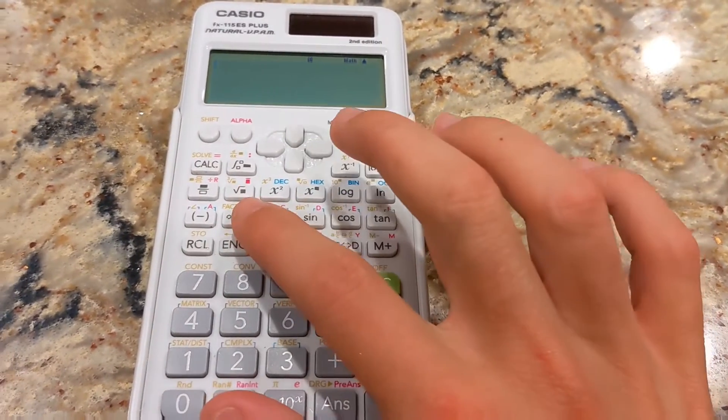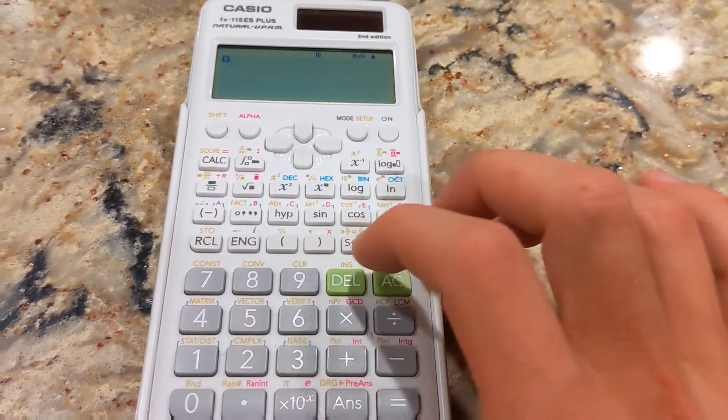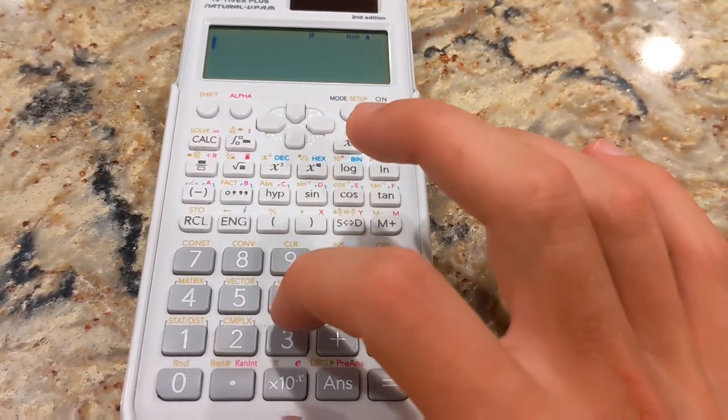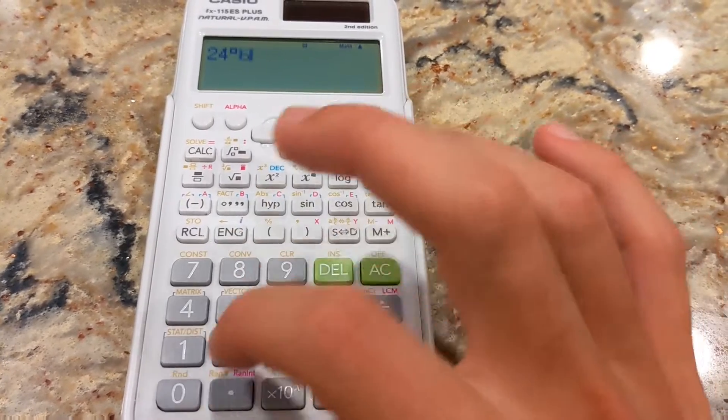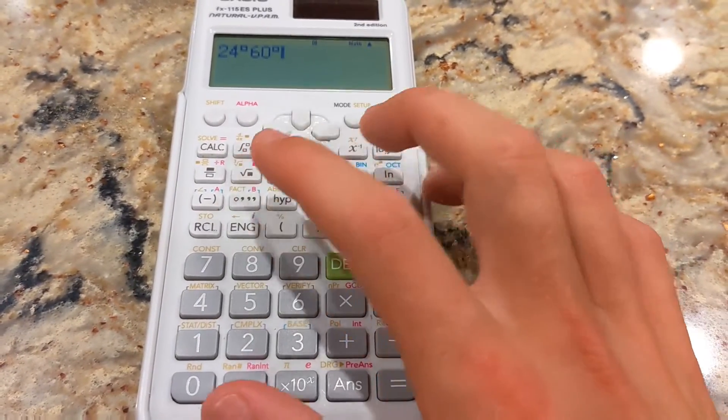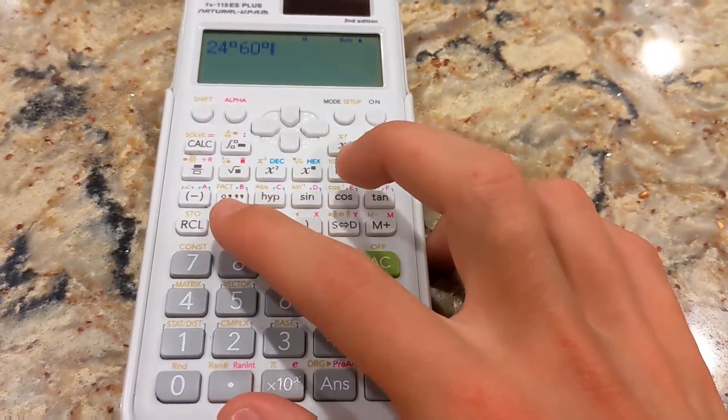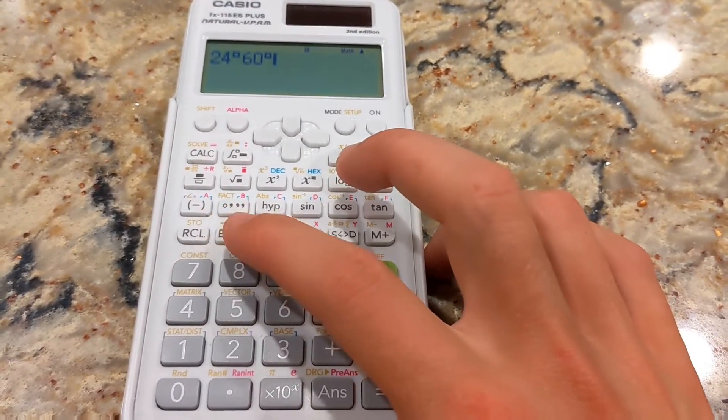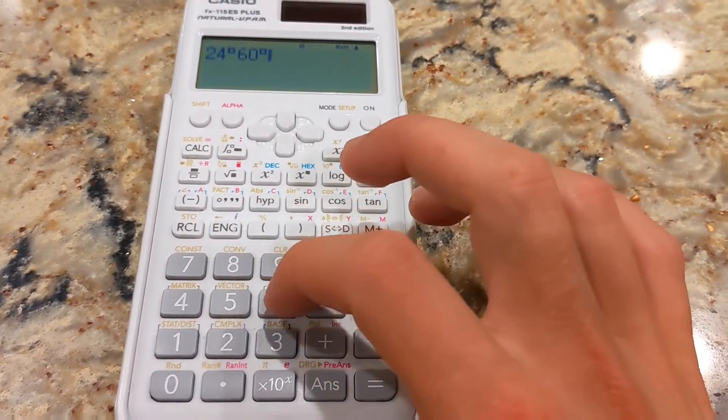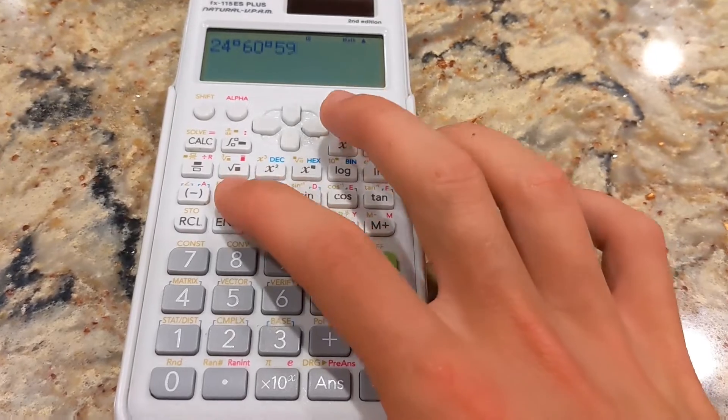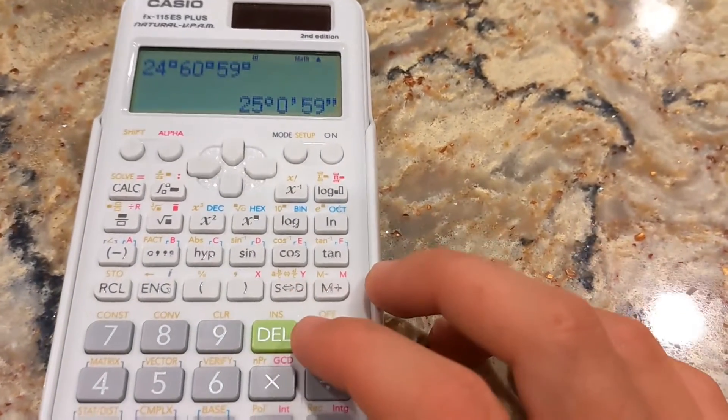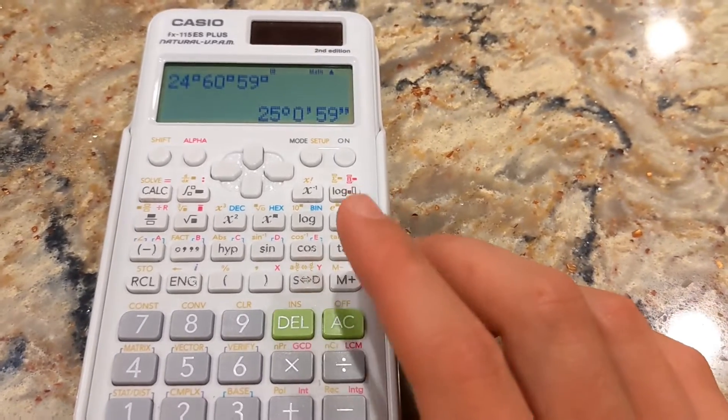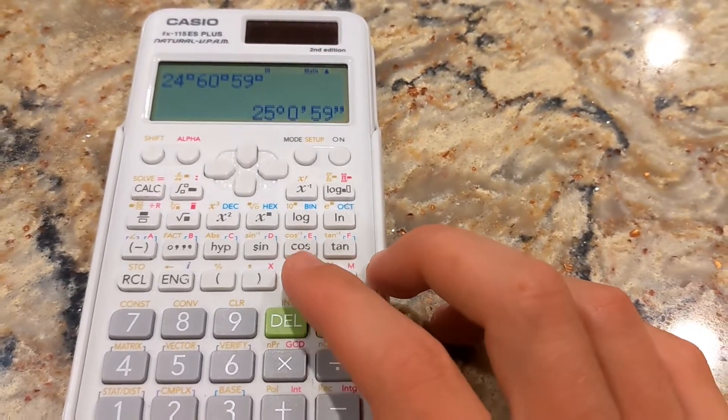Another cool feature you get on this is time. So maybe, delete, sorry about that, 24 hours, 60 minutes. And it'll show degrees, but it's really going degrees, hours, minutes, and 59 minutes equals 25, 0, 59.